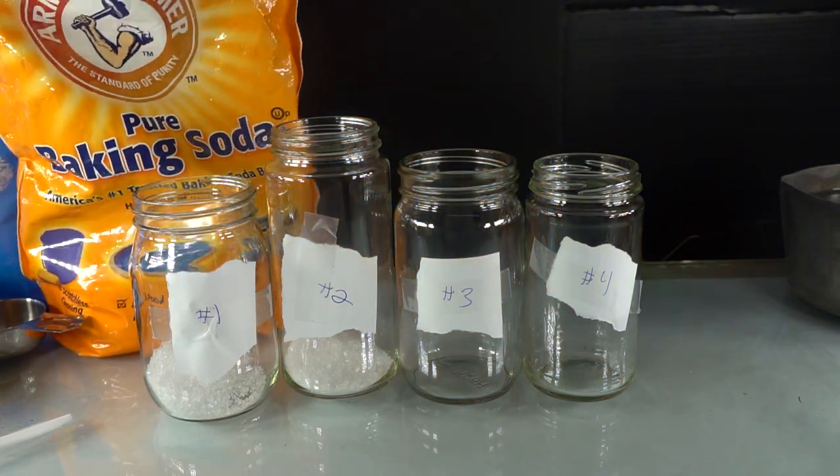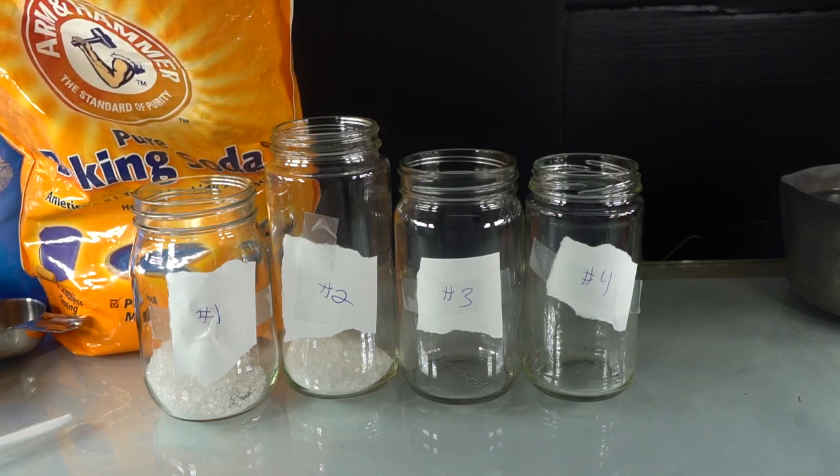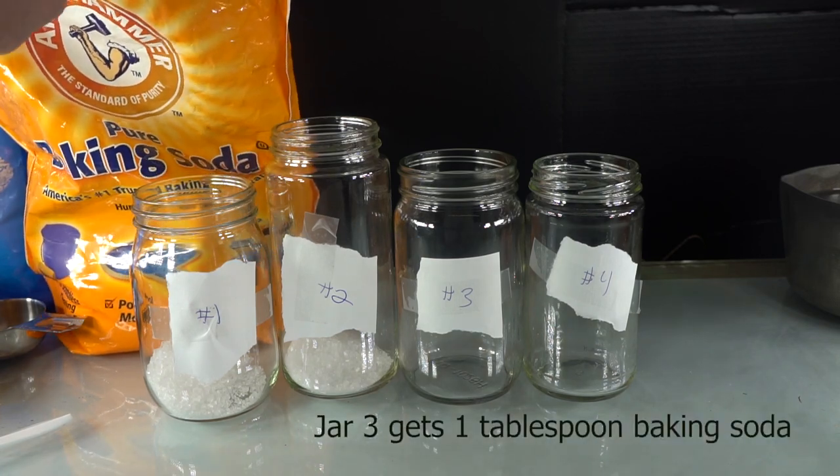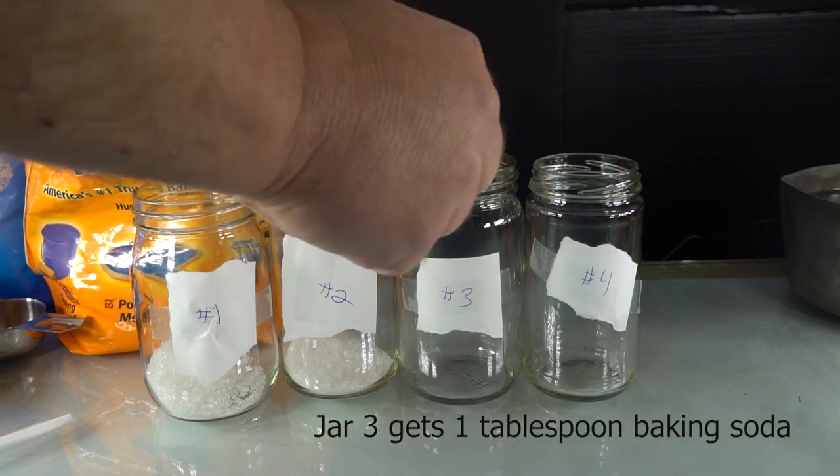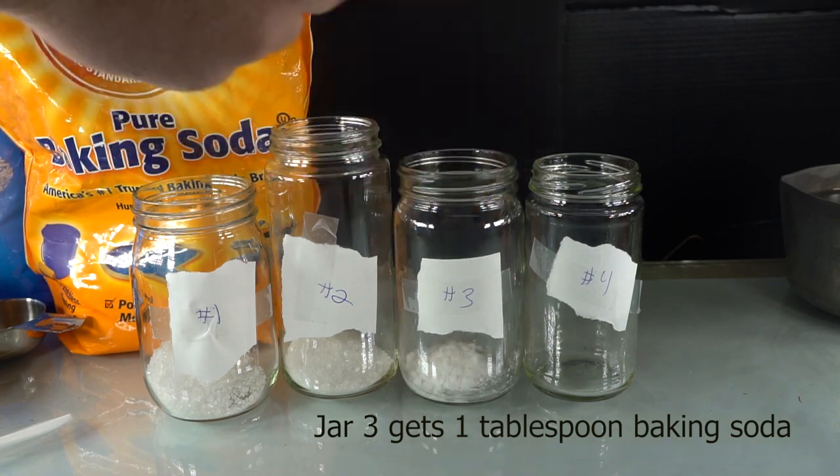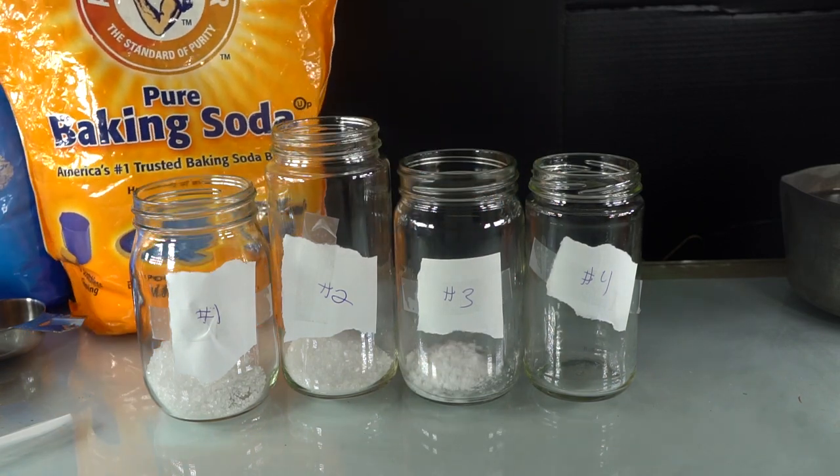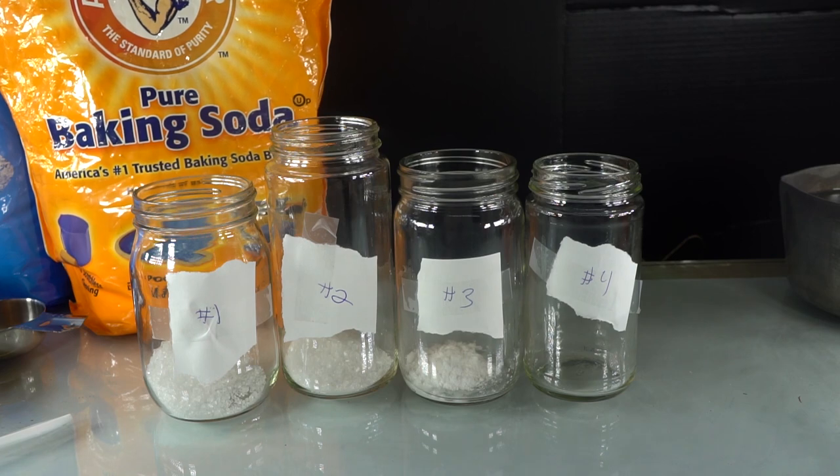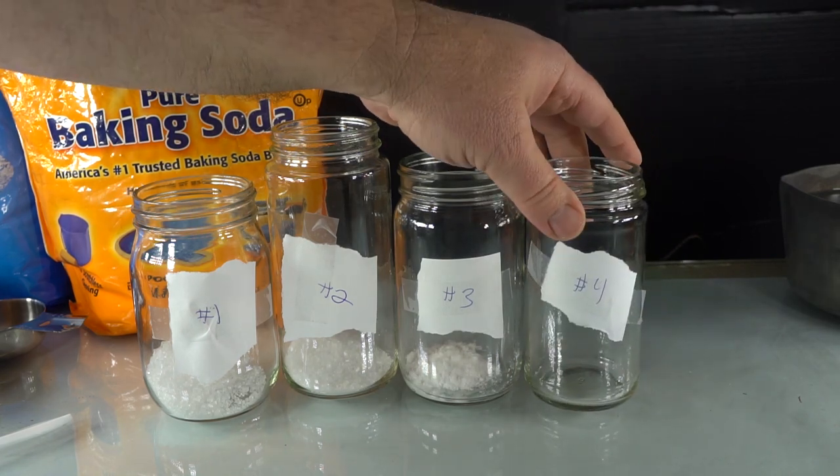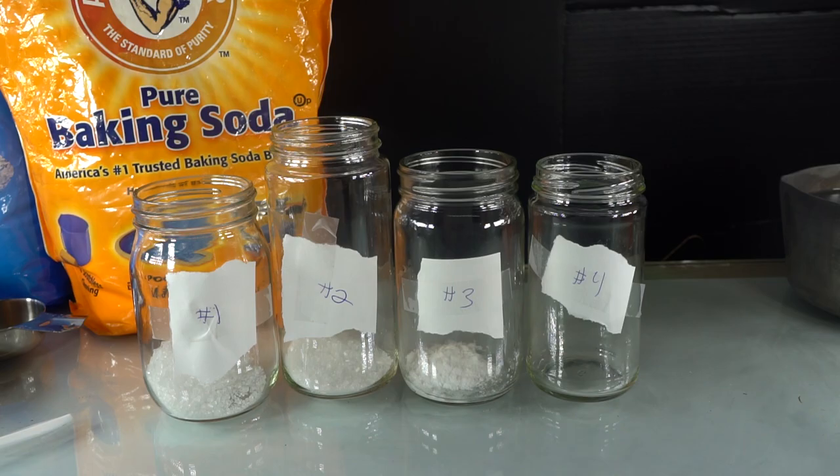Let's put 16 grams, which is half an ounce or one tablespoon, of sodium bicarbonate baking soda into jar number three. Now the fourth jar will stay empty for the moment, but it is going to contain our sodium carbonate, which we will make in the oven now.